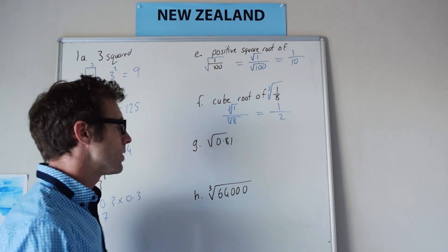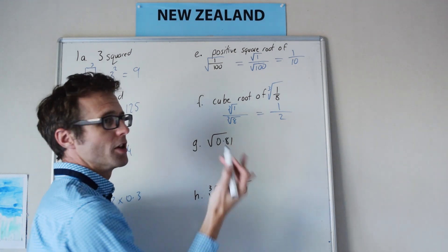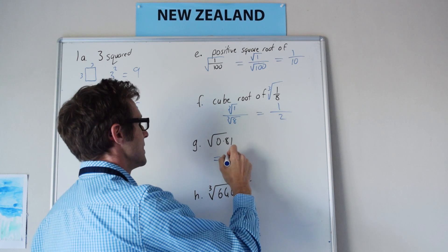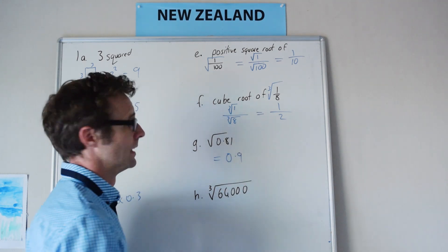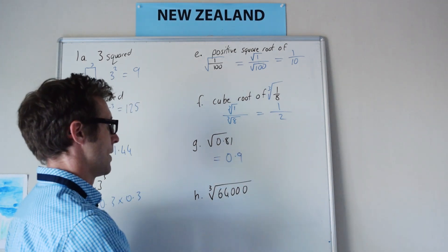The square root of 81, well you know that 9 times 9 is 81, so 0.9 times 0.9 is 0.81.